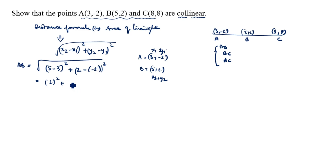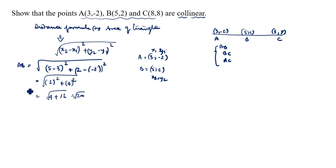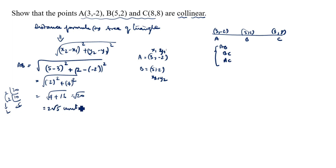5 minus 3 is 2, squared = 4. 2 minus (-2) is 4, squared = 16. So AB = √(4 + 16) = √20. We can write 20 = 4 × 5, so √20 = 2√5. Therefore AB = 2√5 units.